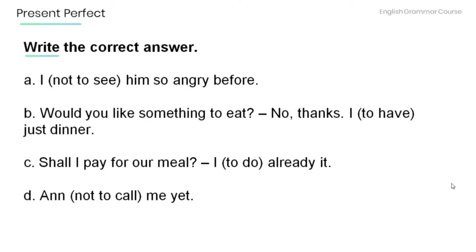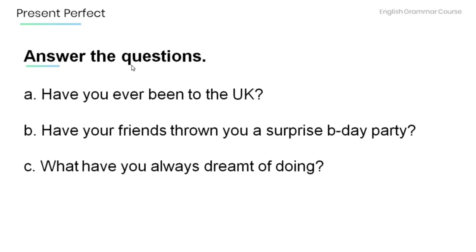Now read the following sentences and write the correct answer. A. I haven't seen him so angry before. B. Would you like something to eat? No thanks — I've just had dinner. C. Shall I pay for our meal? I've already done it. D. She hasn't called me yet.